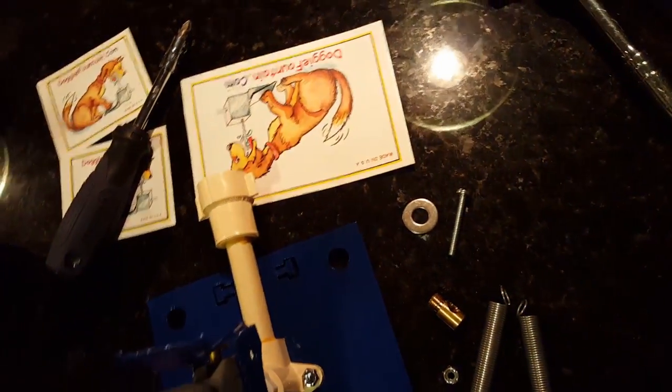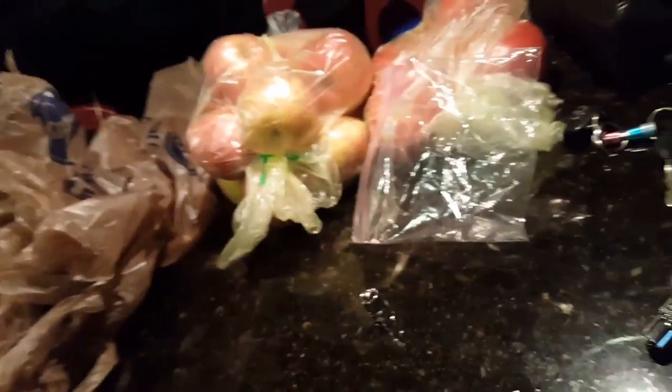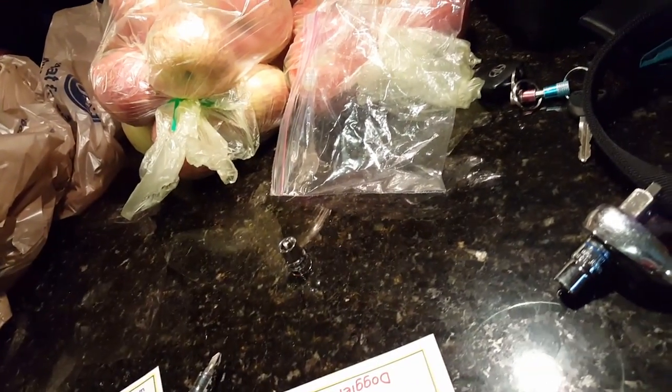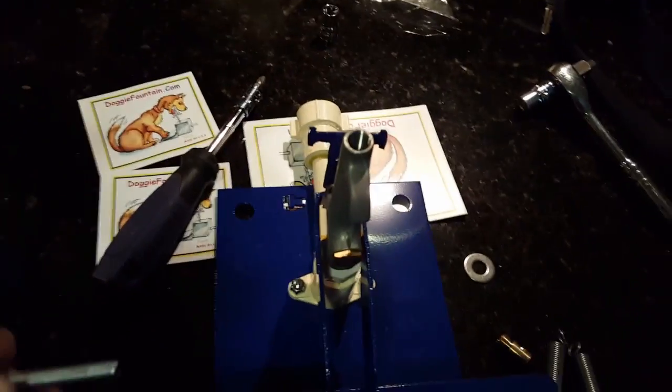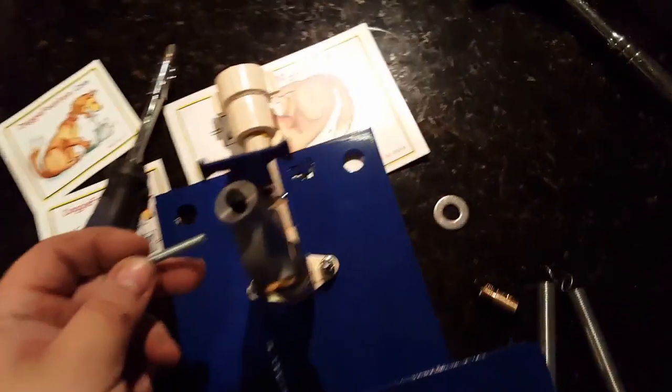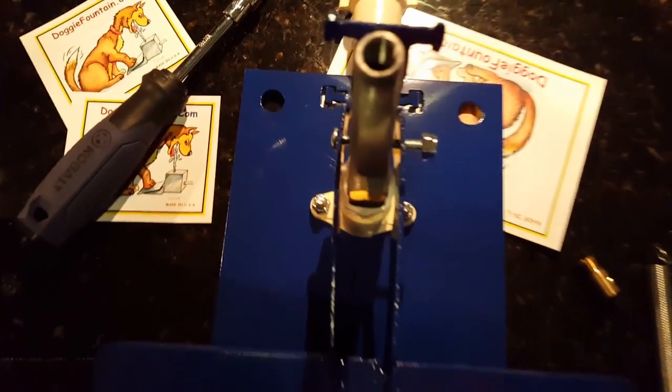Now how you're going to affix this is if you look right here you will see that there is a hole right there and that is where the long screw and nut are going to go to affix the paddle onto the valve and it'll look something like that.